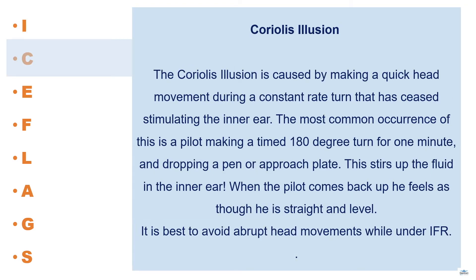The Coriolis illusion is caused by making a quick head movement during a constant rate turn that has ceased stimulating the inner ear. The most common occurrence is a pilot making a timed 180-degree turn for one minute and dropping a pen or approach plate, which stirs up the fluid in the inner ear. When the pilot comes back up, he feels as though he is straight and level. It is best to avoid abrupt head movements while under IFR.